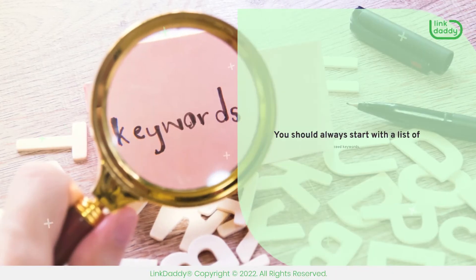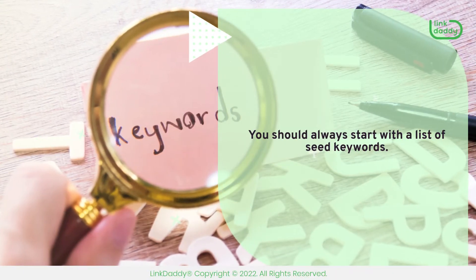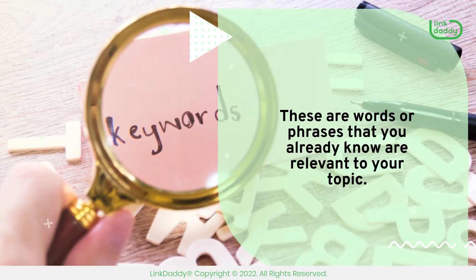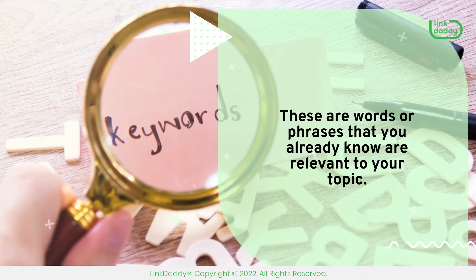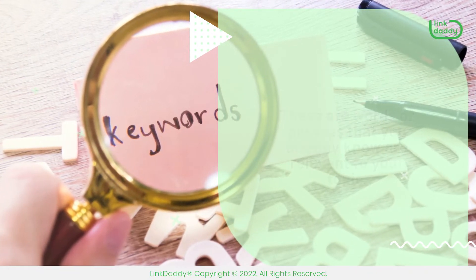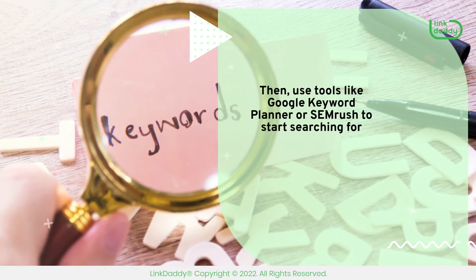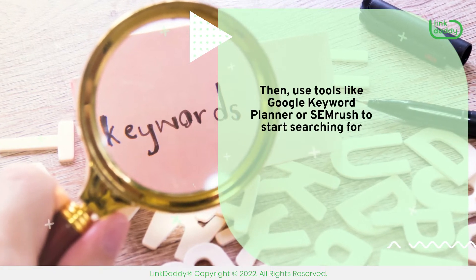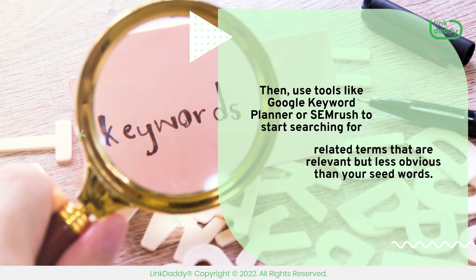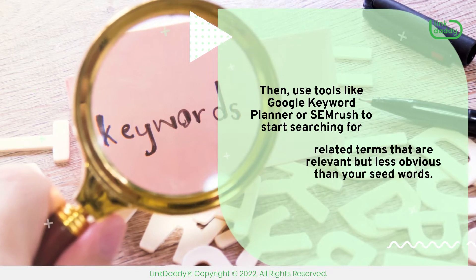You should always start with a list of seed keywords. These are words or phrases that you already know are relevant to your topic. Then use tools like Google Keyword Planner or SEMrush to start searching for related terms that are relevant but less obvious than your seed words.